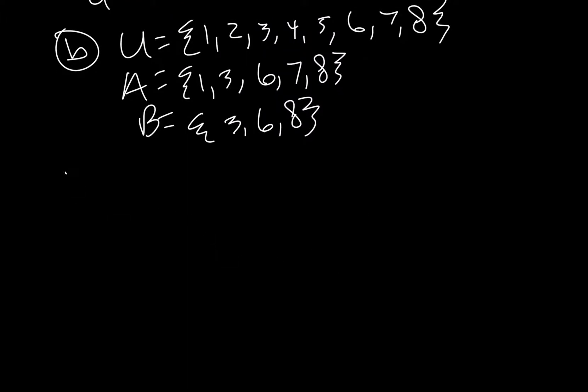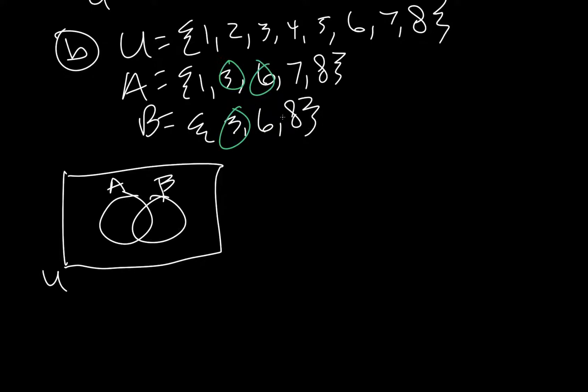So, we have our universal set. We have set A, set B. And we want to find what they have in common. So, they both have threes, they both have sixes, and they both have eights.